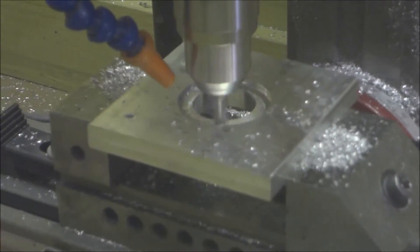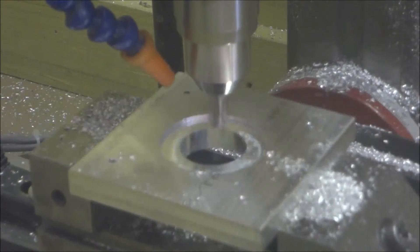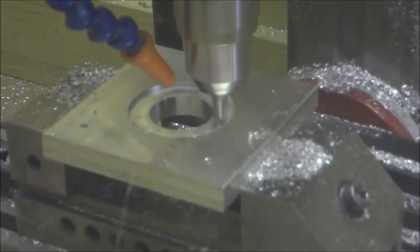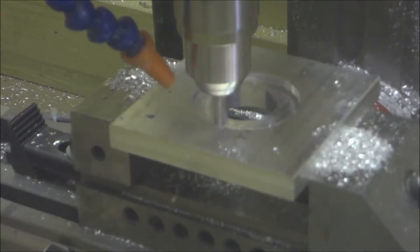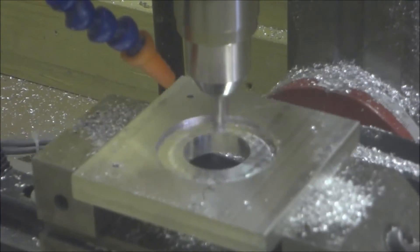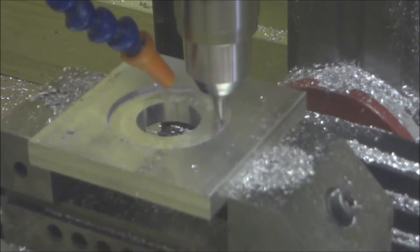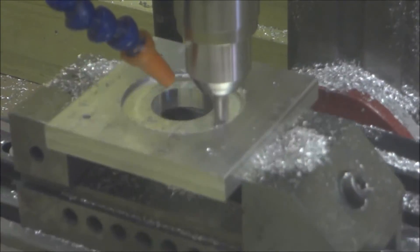So it turned out pretty good. It's a little bit of a challenge on the X2 here because this is a 4x4 piece of stock and my work envelope on the X2 is 4 inches by 8 inches, but as you can see it turned out pretty good and saved me quite a bit of time over manual machining this out.